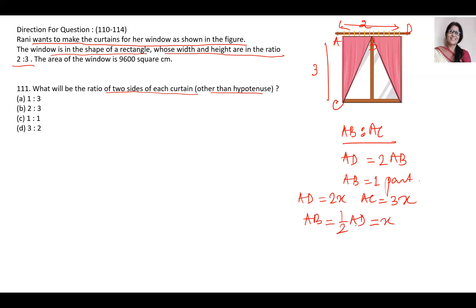So AB is 2x divided by 2 to 3x. That will be 1 is to 3. One to three is the answer.